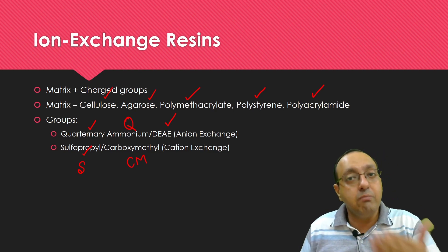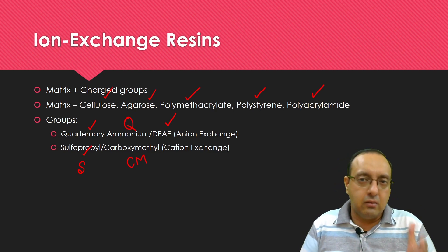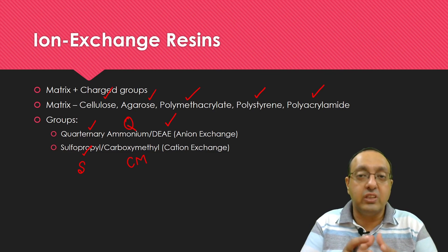These groups are attached to the matrix and together matrix plus charged groups constitute the ion exchange resin. This is a scanning electron micrograph of resin and you can see that these are very tiny beads which are present in the column. So billions of these beads are present in the column.